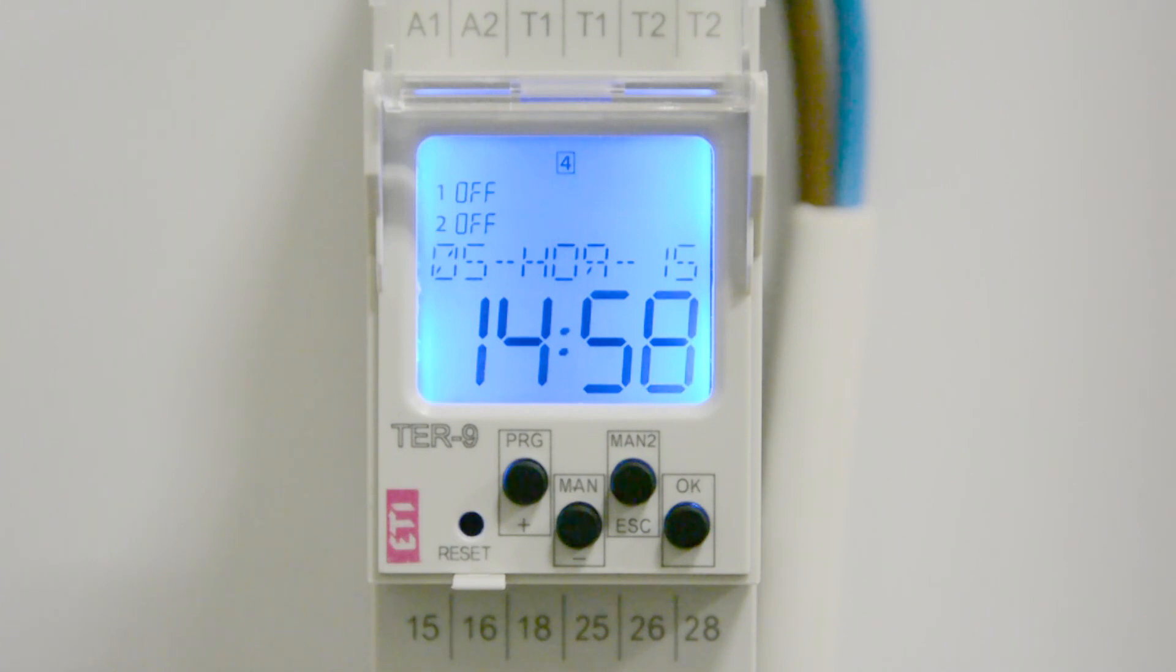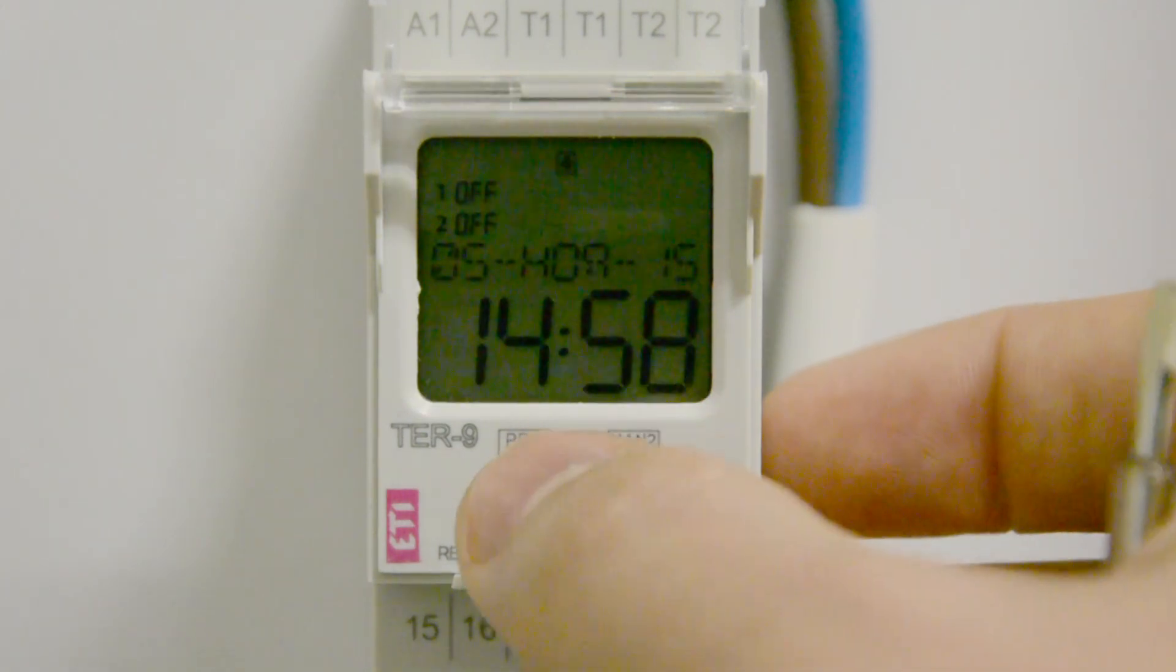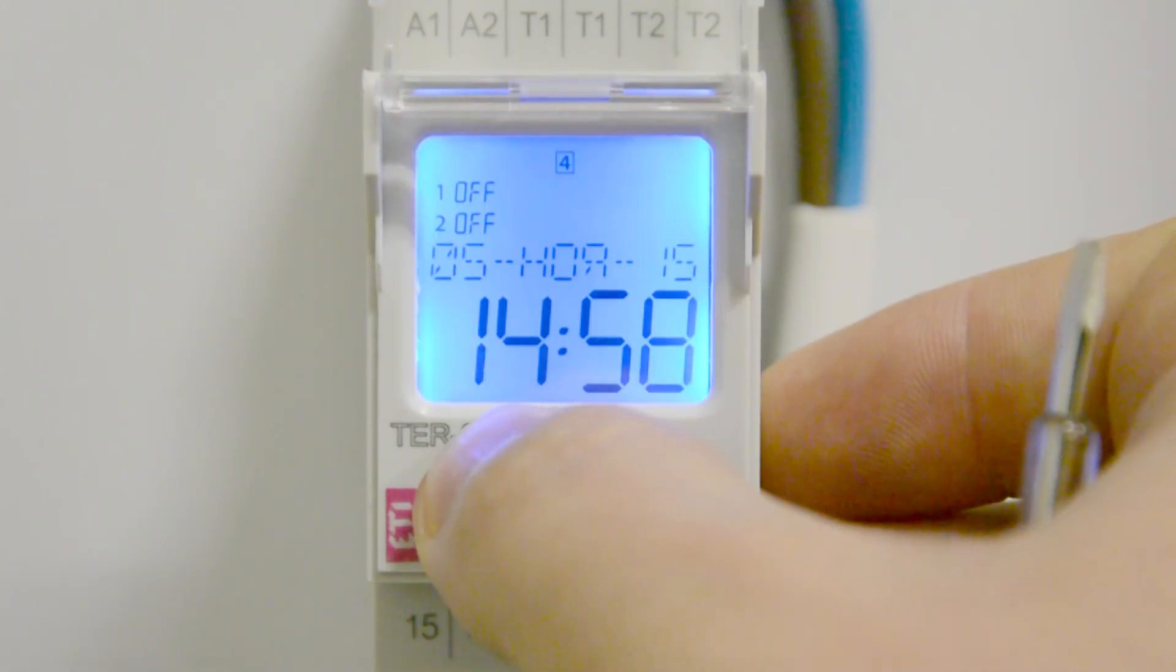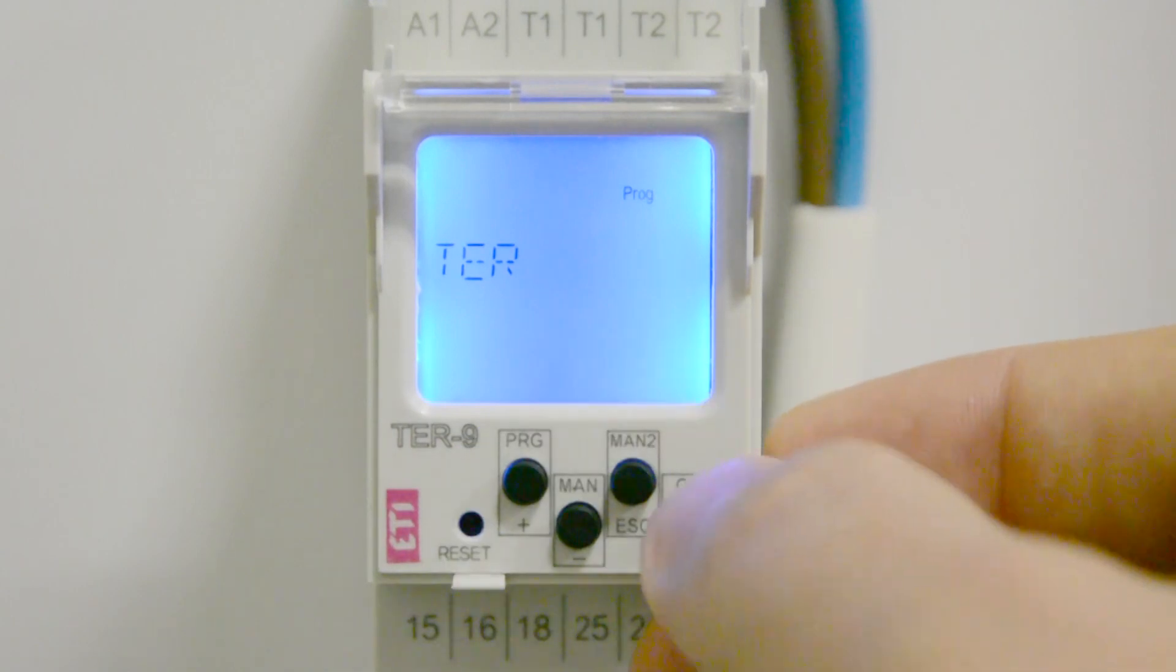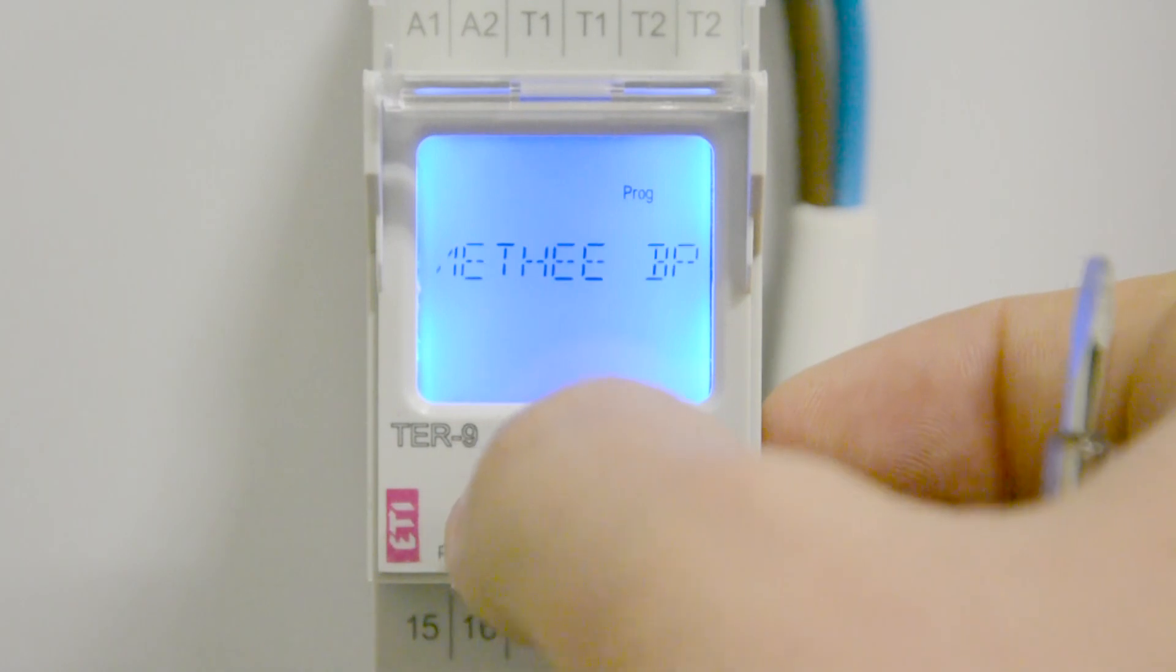The device comes preloaded with real-time settings. To change the date and time, use the PRG button to go to the programming menu, then go to the date-time menu. By pressing the plus and minus buttons, we move between the submenu items, and with the OK button, we confirm our selection.